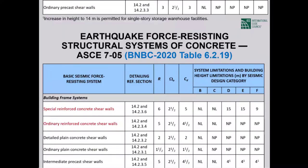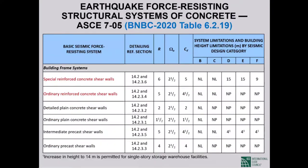When a special shear wall is part of a building frame system, the R value is 6. For a building frame system featuring ordinary reinforced concrete shear walls, R=5. The R value varies between 5 and 7 for special shear walls depending on which structural system they are part of: R=5 for a bearing wall system, R=7 for a dual system with special RC moment frames.